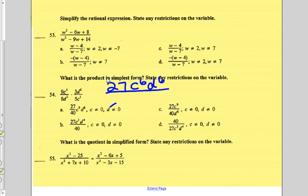And on the bottom, I'm just going to multiply the 8 and the 5 and make 40c cubed downstairs and d squared downstairs.